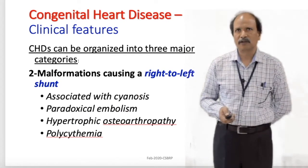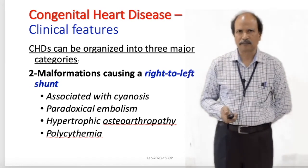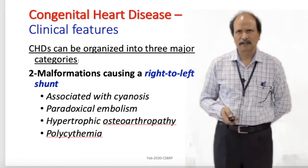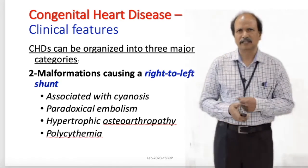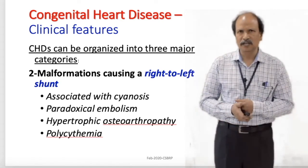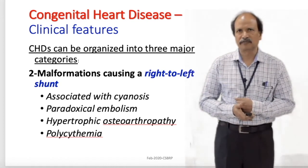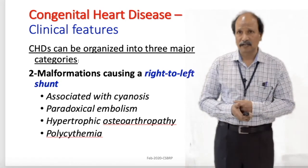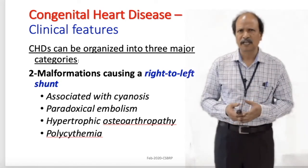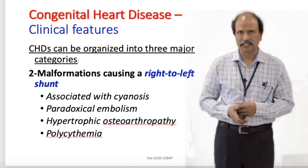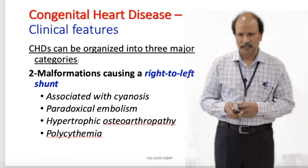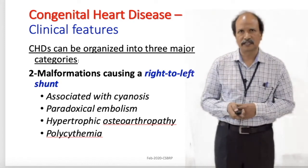Coming to the second segment — malformations causing right to left shunt — they are usually associated with cyanosis from birth. A peculiarity of this condition is that because of deoxygenated blood circulating in the body, they will exhibit hypertrophic osteoarthropathy, where you will see the patient developing clubbing involving almost all digits. In addition, there will be thickening of the bone and thickening of the skin. Because of this deoxygenated state, the patient may also have polycythemia.